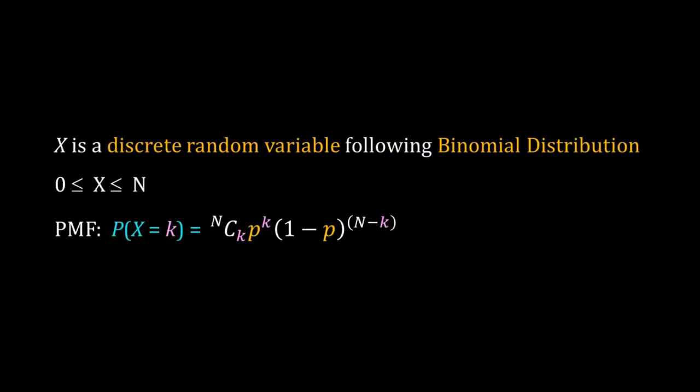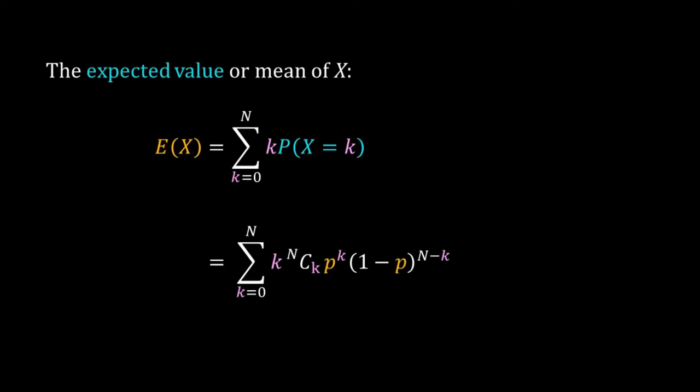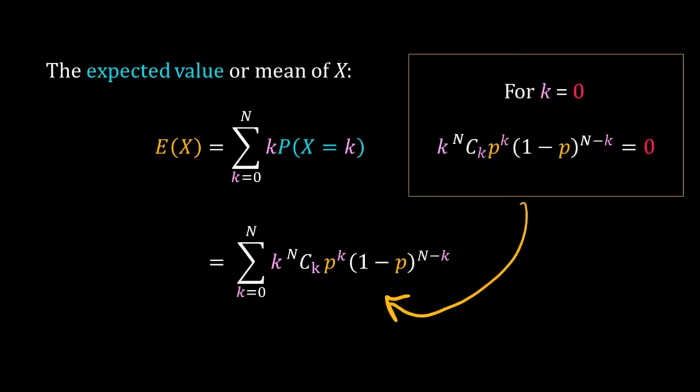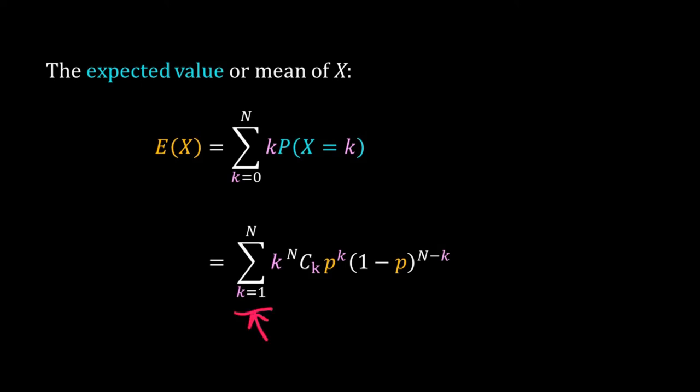We now use the definition of moment to calculate the mean, or expected value, of a random variable x that follows a binomial distribution. For the expected value, we multiply k, a particular value of x, by its probability and sum over all possible values of k, where k goes from 0 to n. We use the PMF for binomial distribution. When k = 0, the product is zero, so we start the sum from k = 1.